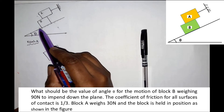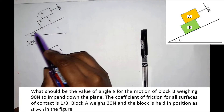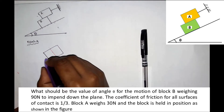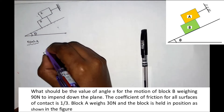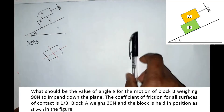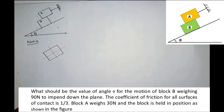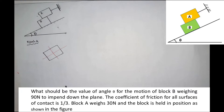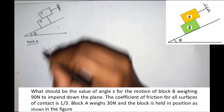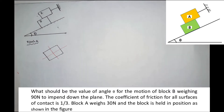We need to identify parallel and perpendicular components relative to the inclined plane. In the free body diagram, the first force we consider is the weight. What is the weight of block A? The weight of block A is 30 N.